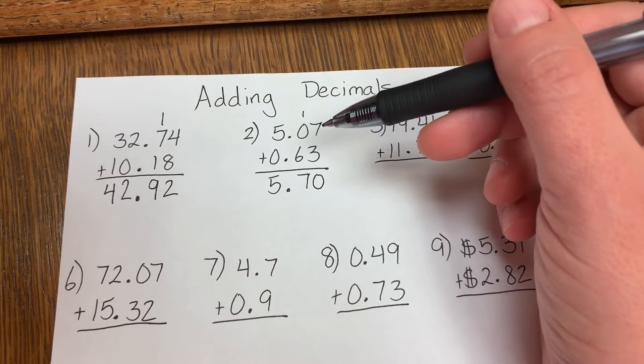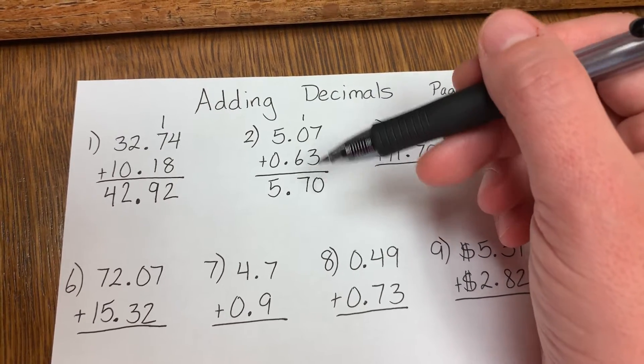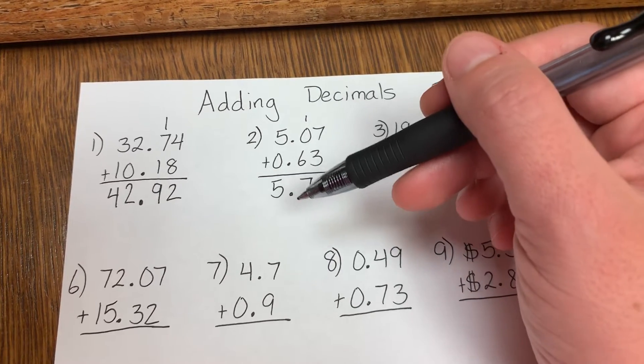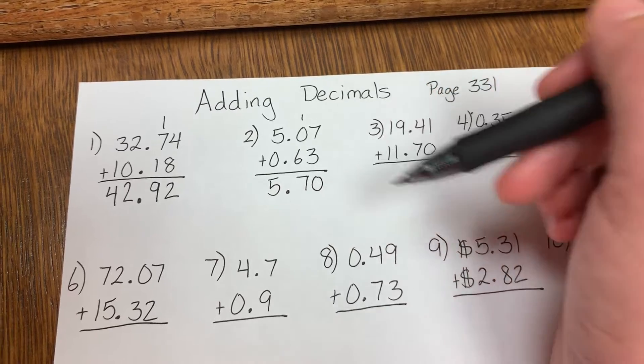Number 2: 7 plus 3 is 10. 0 down, carry the 1. 1 plus 6 is 7. 5 plus 0 is 5. So your answer is 5.70.